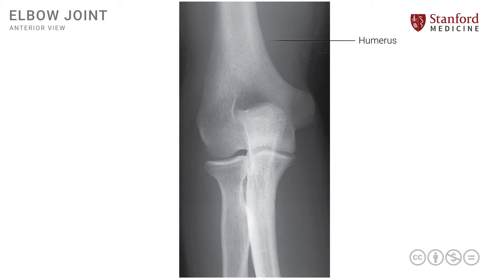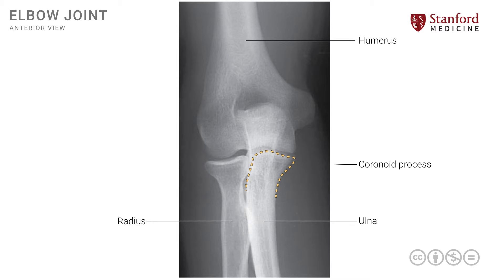This is the humerus at its distal end. We can also see the ulna and the radius more distally — the radius on one side and the ulna on the other. These three bones participate in the formation of the elbow joint, which is a hinge joint. The coronoid process is outlined here in yellow-orange color, and the radial head is outlined in reddish-orange, both articulating with the distal end of the humerus.